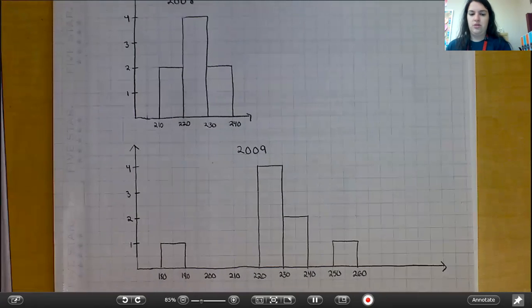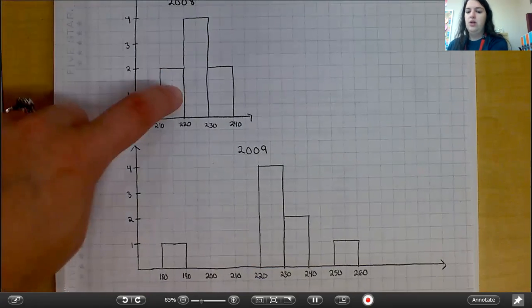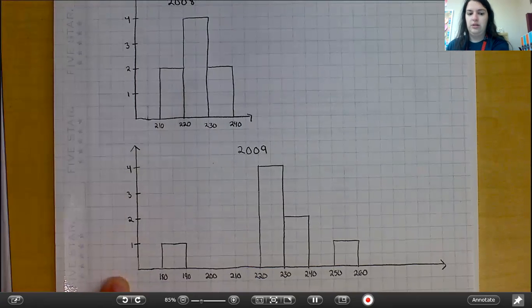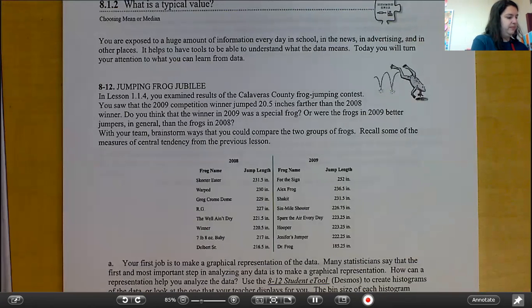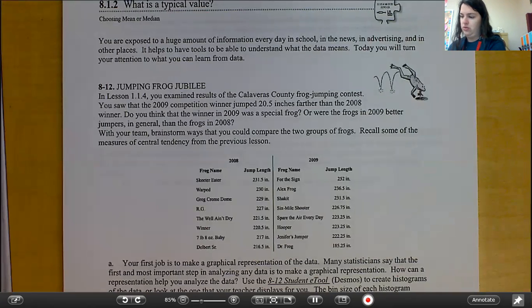Okay, when you're done, here are my histograms. 2008 is up here. 2009 is down here. That is all that I really wanted you to look at there.